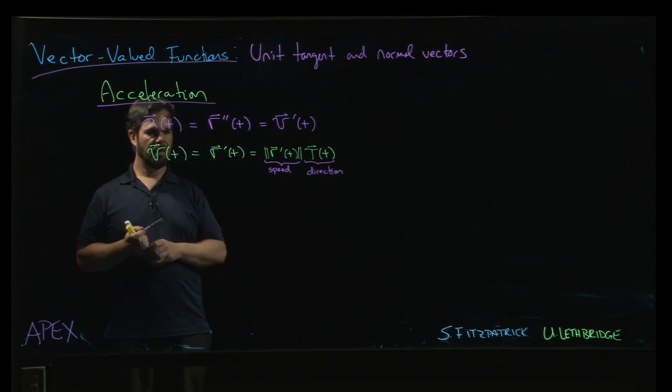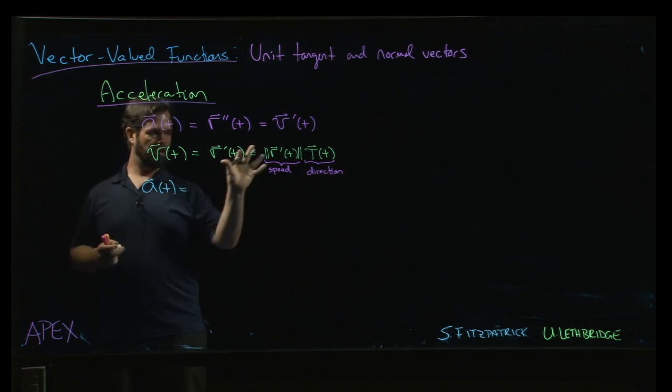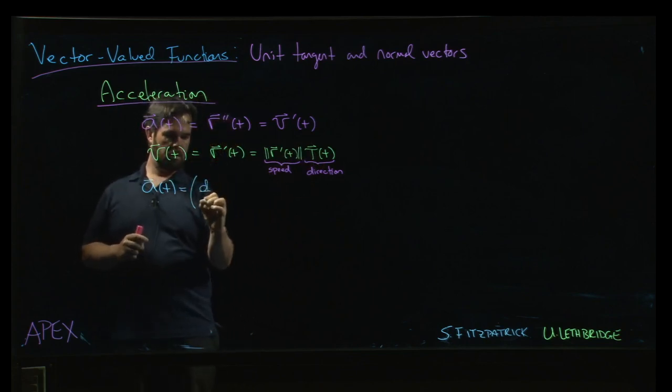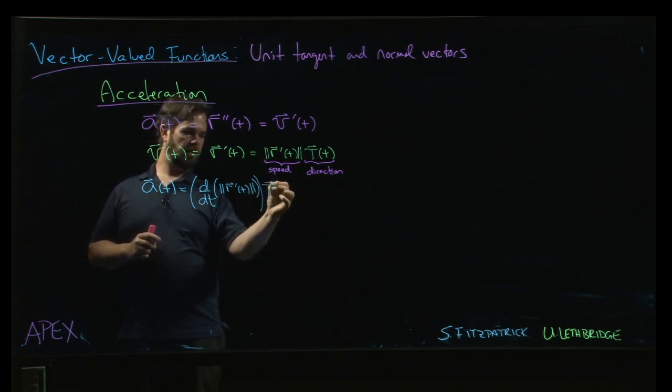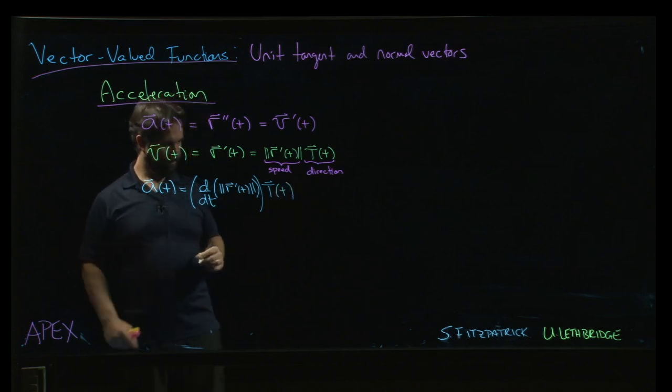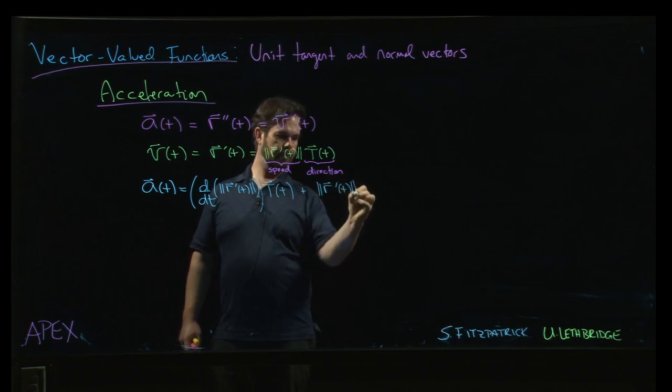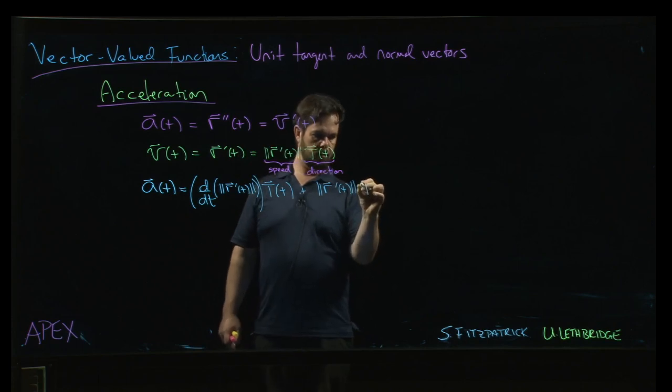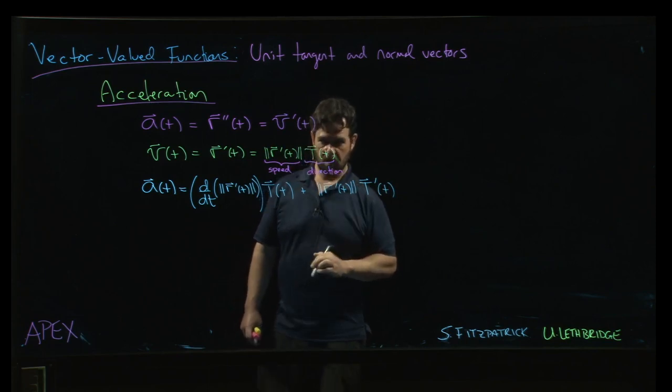Now, what happens if you take the derivative here? So the acceleration, which is v prime, using the product rule, is going to be the derivative with respect to t of the magnitude of r prime, times the unit tangent vector, plus the magnitude of r prime times t prime.